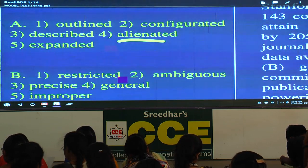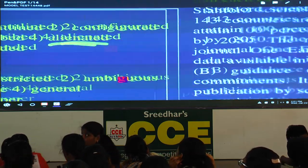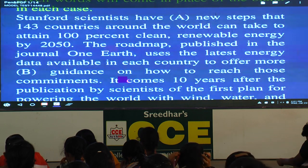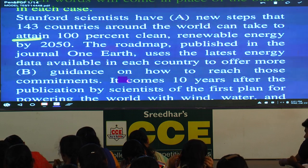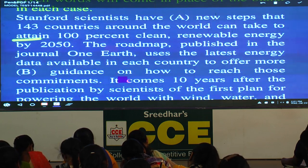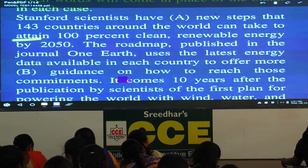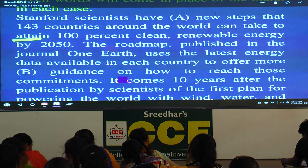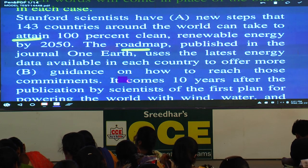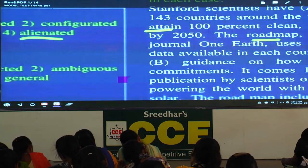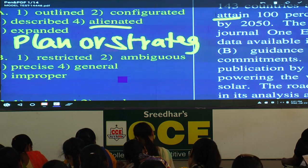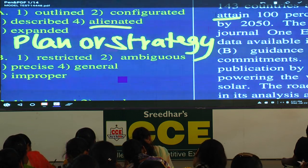Stanford scientists have outlined new steps that 143 countries around the world can take to attain — underline the word 'attain.' Attain means achieve; write that meaning. You could also write accomplish — achieve, accomplish, attain are all positive related words. Hundred percent clean renewable energy by 2050. Please underline the expression 'roadmap' and write the meaning: a roadmap means a plan or strategy for a particular goal.